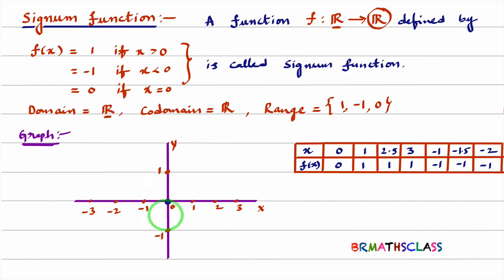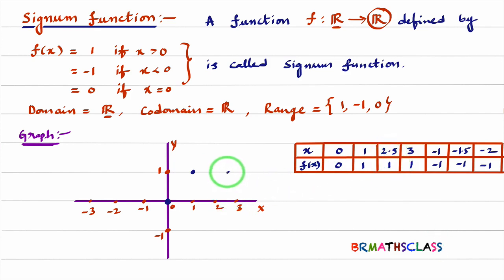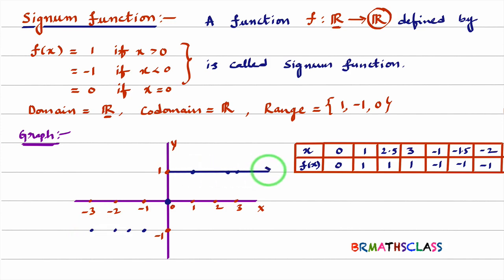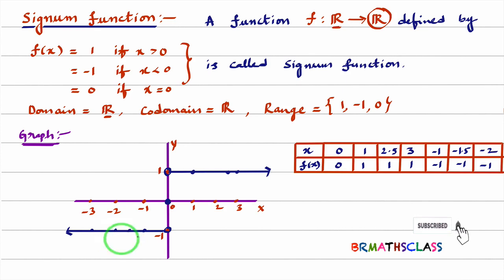Now plot these points on the graph. The point (0, 0) is at the origin. The point (1, 1) is here. The point (2.5, 1) is here. The point (3, 1) is here. For the negative side, the point (minus 1.5, minus 1) is here, and (minus 2, minus 1) is here. If I also plot minus 3, f(minus 3) is minus 1. Now join all these points. You observe that the graph continues in a straight horizontal line at y = 1 for positive x, and at y = minus 1 for negative x, with an open circle at the boundary. This is the graph of the signum function.